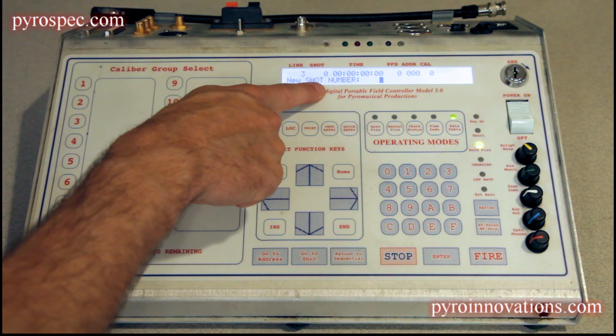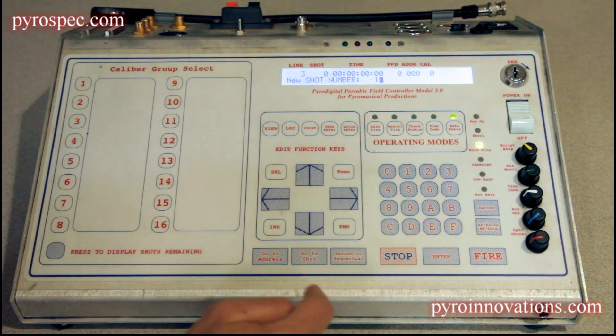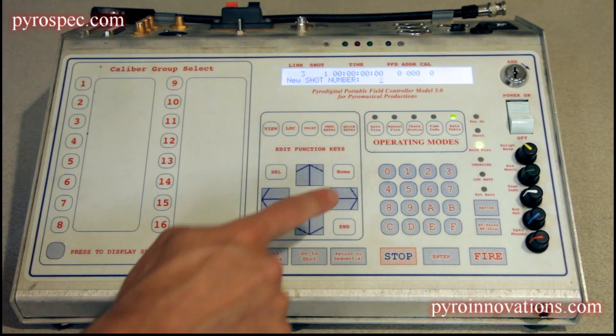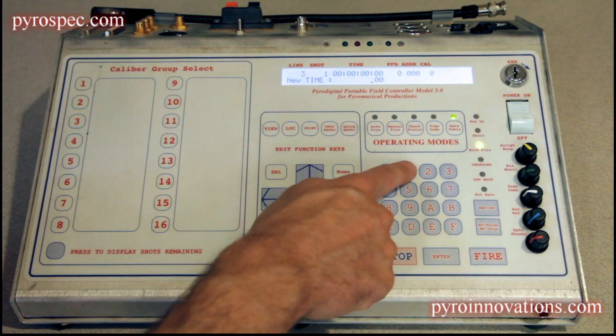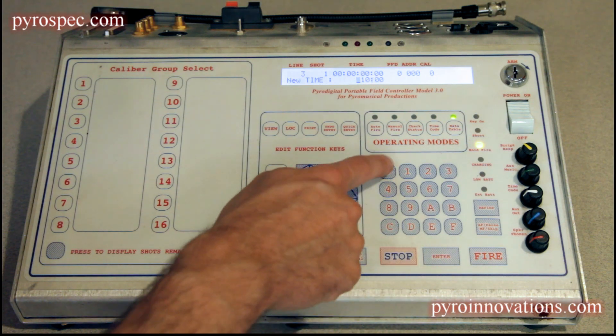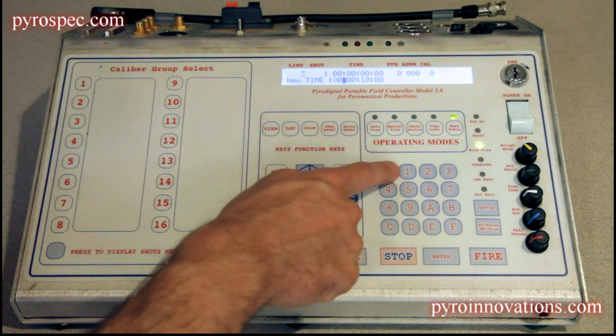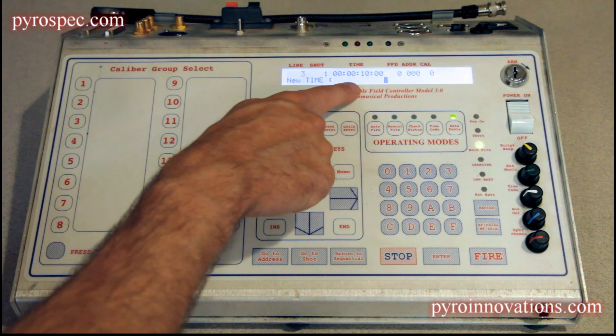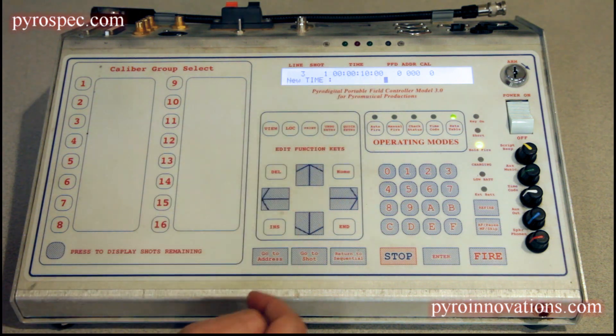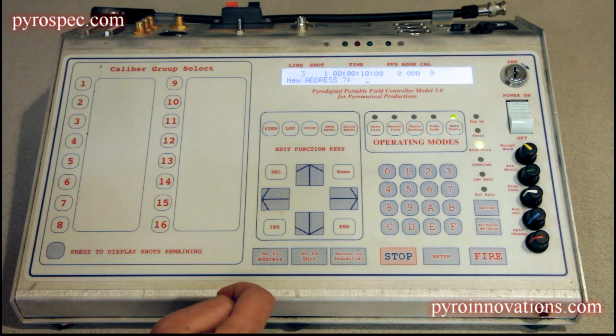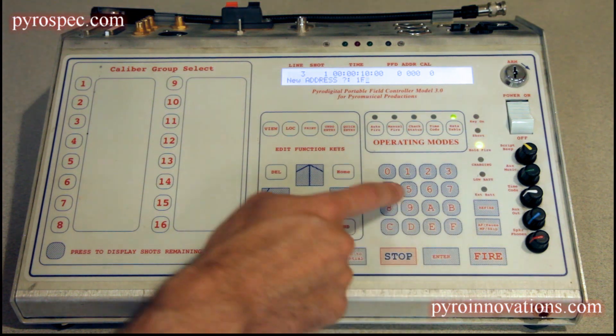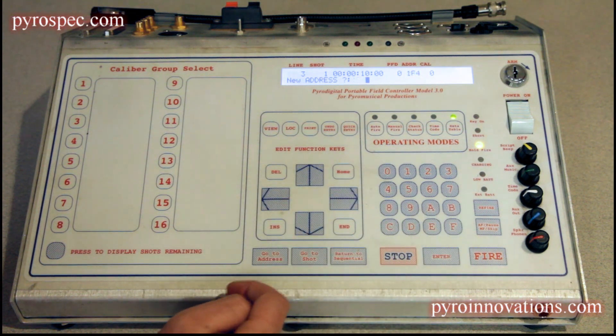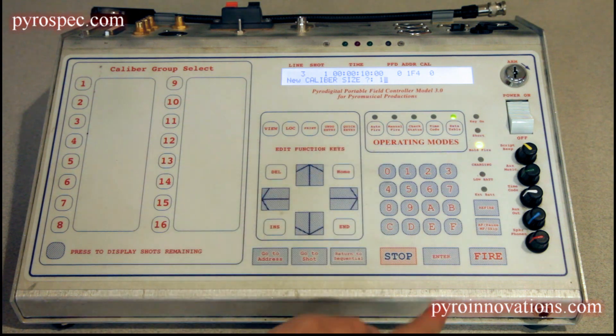We're going to start with shot number again, shot one. Time, we want it to be the same time: zero zero ten zero zero zero zero, enter. So we have zero hours, zero minutes, ten seconds, zero frames. Scroll over again, pre-fire time zero. New address, this one's going to be 1F4, enter. Our caliber size is going to be one again.